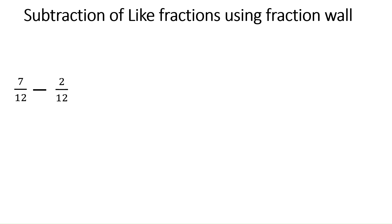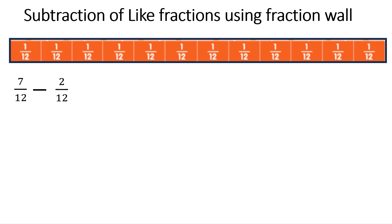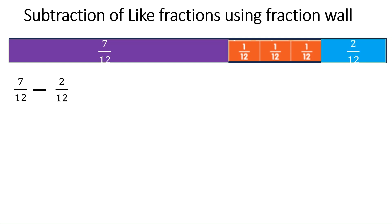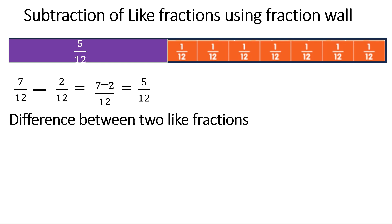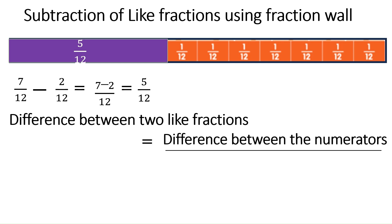Next is subtraction of like fractions using the fraction wall: 7/12 − 2/12. Since the denominator is 12, take a 1/12 strip with 7 parts shaded on the left. I have marked 2 parts to show 2/12. Removing 2/12 from 7/12, what remains is 5/12. So 7 − 2 over 12 equals 5/12. The difference between two like fractions equals the difference between the numerators over the common denominator.